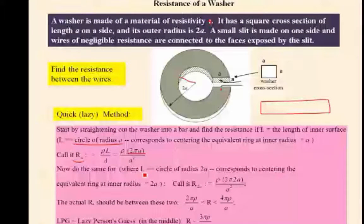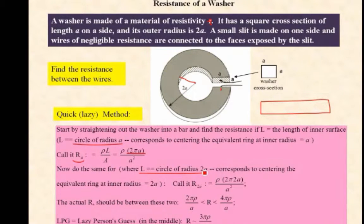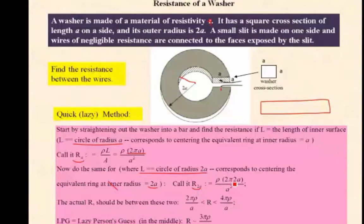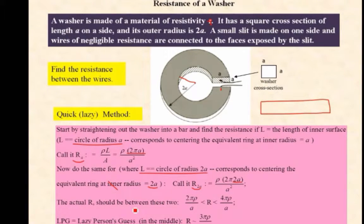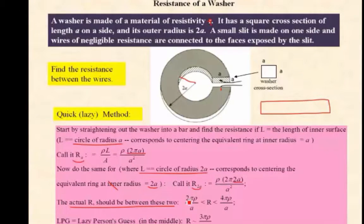Now we do the same thing for L equals the circumference of a circle of radius 2A. We look at that. That's the equivalent ring at the outer radius 2A. And we call that R_2A. All we're doing is replacing A with 2A here. Here's our approximation. We say the actual R should be between these two. If you look here, this is a 2 to 4. And so we'll just set it equal to 3. So this is the lazy person's guess, which is right in the middle. R equals 3πρ over A.